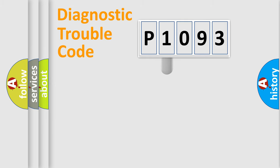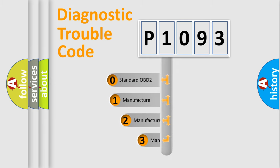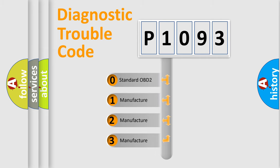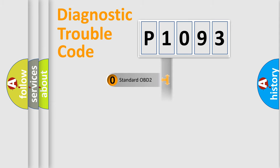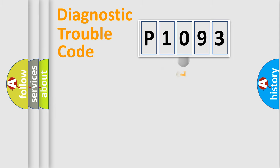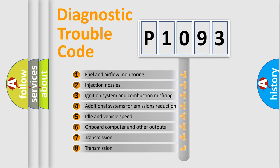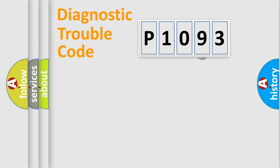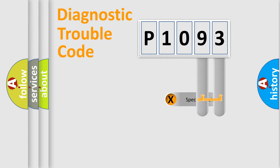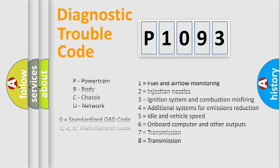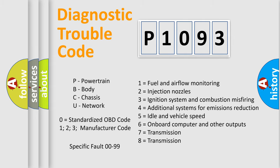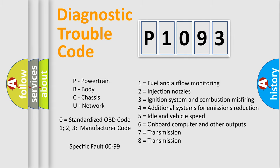This distribution is defined in the first character of the code. If the second character is expressed as zero, it is a standardized error. In the case of numbers 1, 2, or 3, it is a more specific manufacturer-defined error. The third character specifies a subset of errors. This distribution is valid only for the standardized DTC code, and only the last two characters define the specific fault of the group.